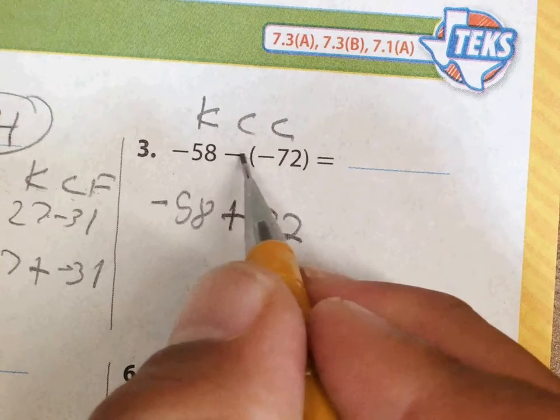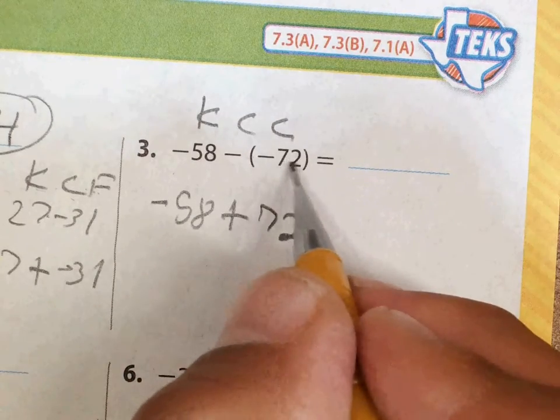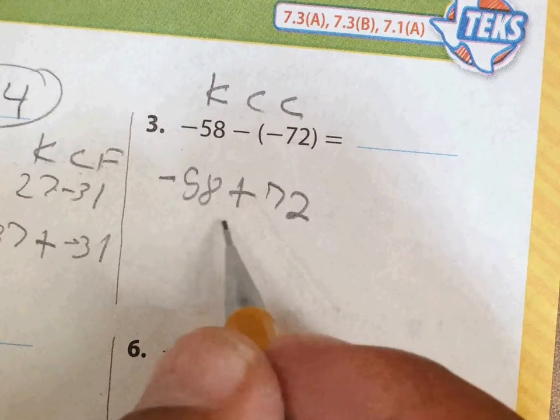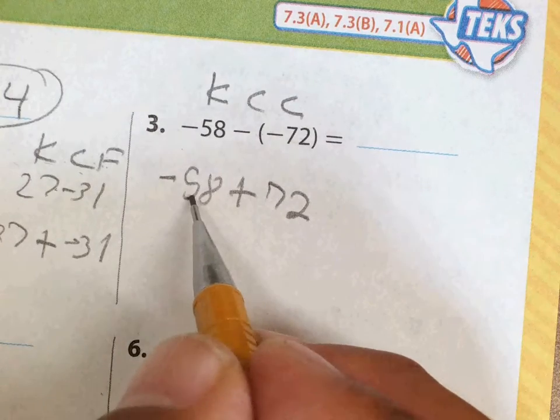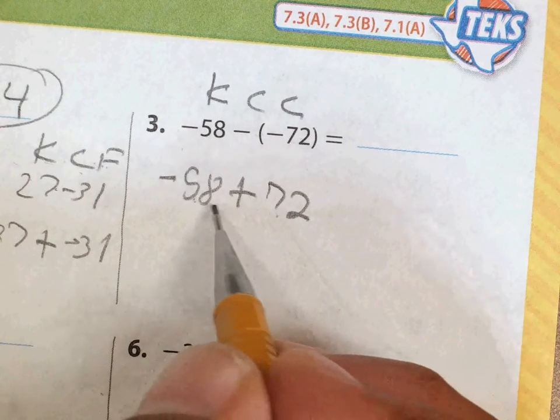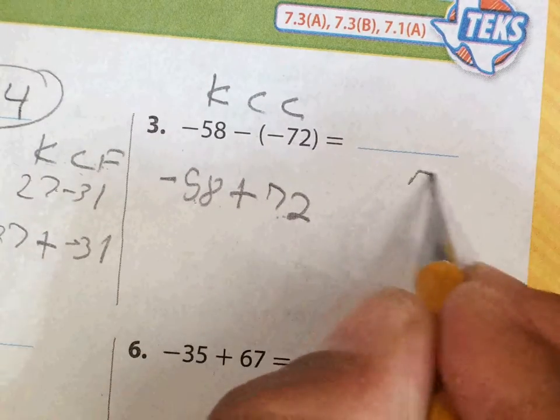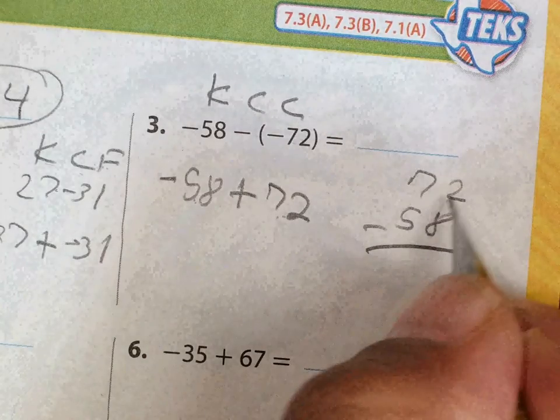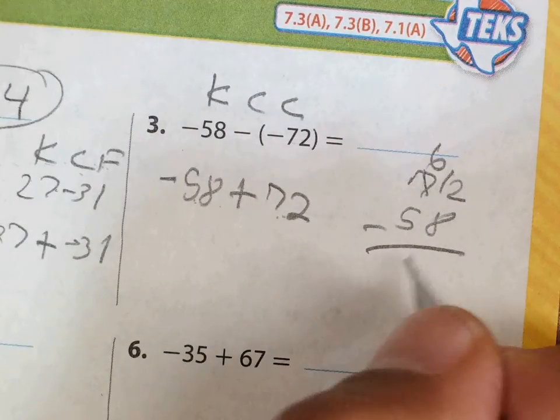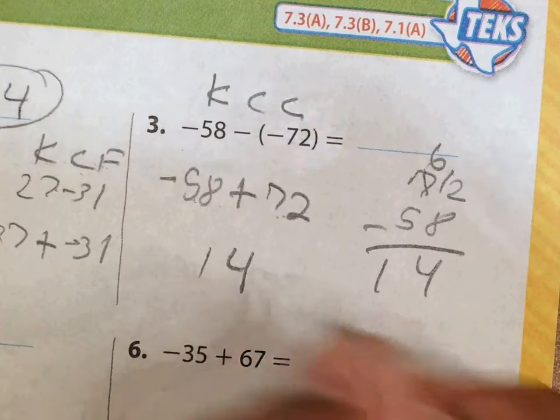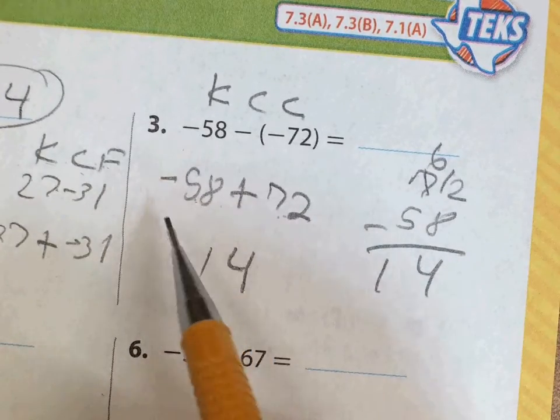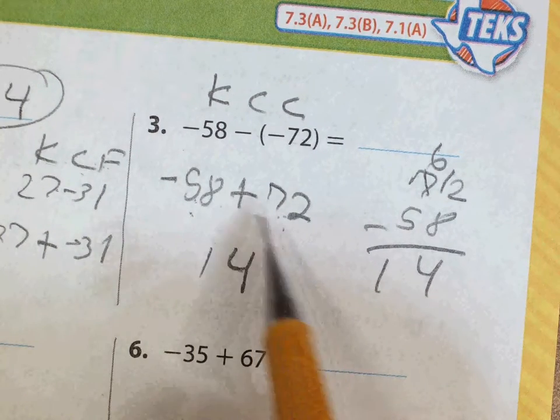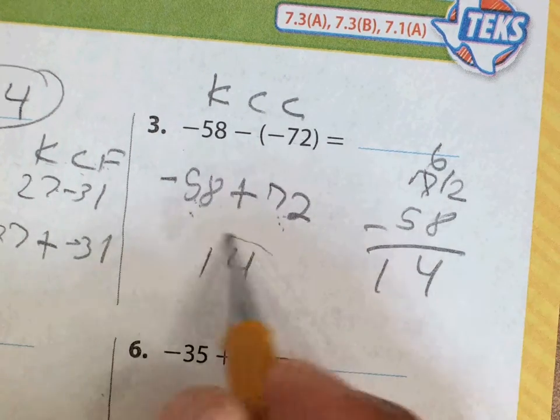And so now we have this addition, and so by rule, same sign add, different sign subtract. Different signs, so then I'm gonna subtract 72 minus 58. I'm gonna regroup and I'm gonna get 14. Now is it positive or negative? Well, again, who is further away from zero? We have negative 58 or positive 72. I can tell you 72 is further away, so my answer is gonna be positive.